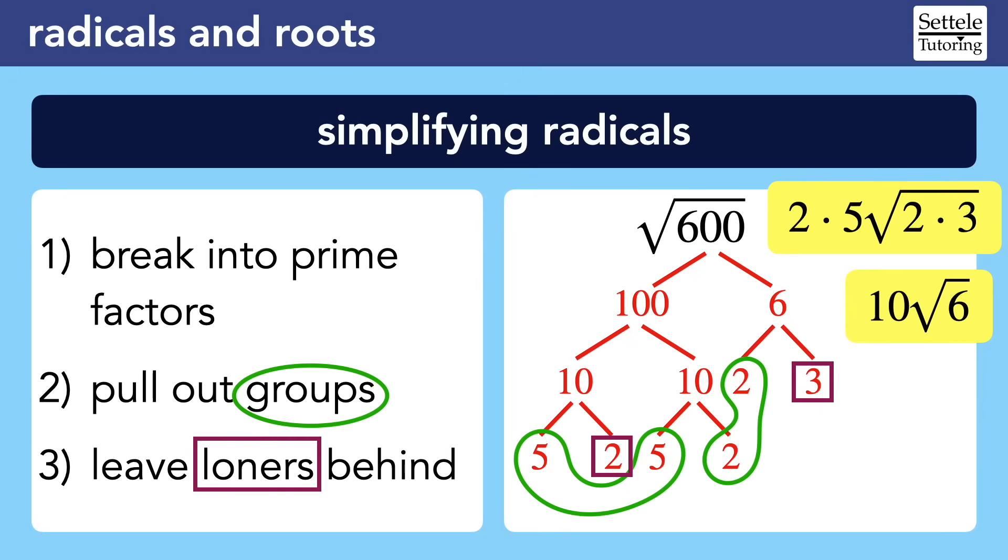To be clear, if we had started out by breaking up the 600 a different way, we still would have gotten to the same final answer because we'd have branches ending in the same prime numbers. Feel free to try it on your own by breaking the 600 into 200 times 3, or 10 times 60. If you know the perfect squares, you can also take shortcuts once you see branches with the same number, like when we split the 100 into two 10s. But I actually think it takes a lot more effort to find the biggest perfect squares that are factors of big numbers like 600. The prime factorization method lets us work with smaller, easier numbers.